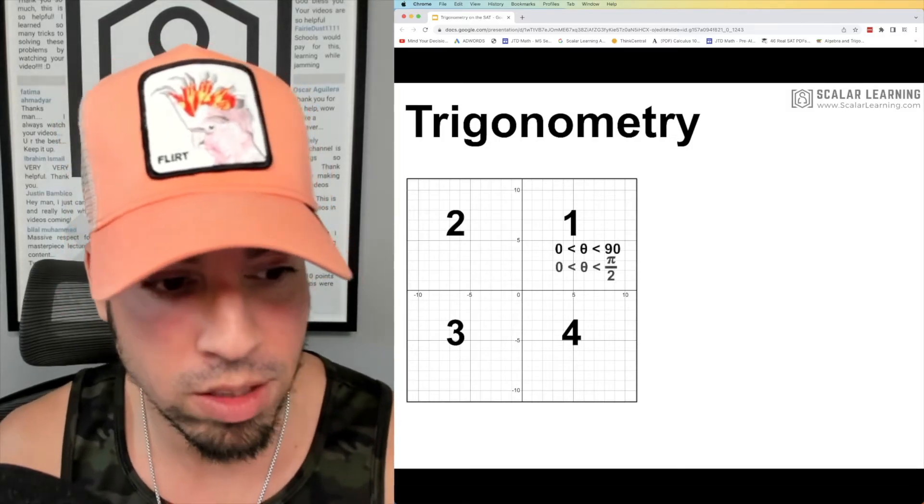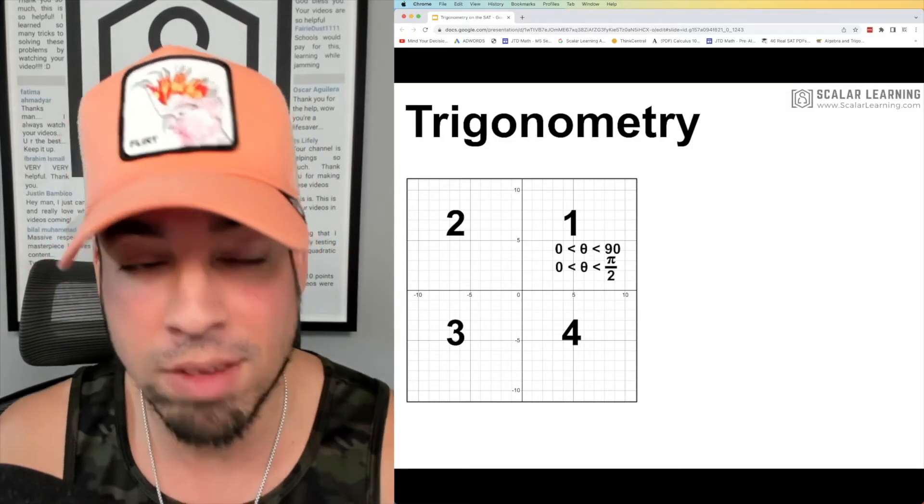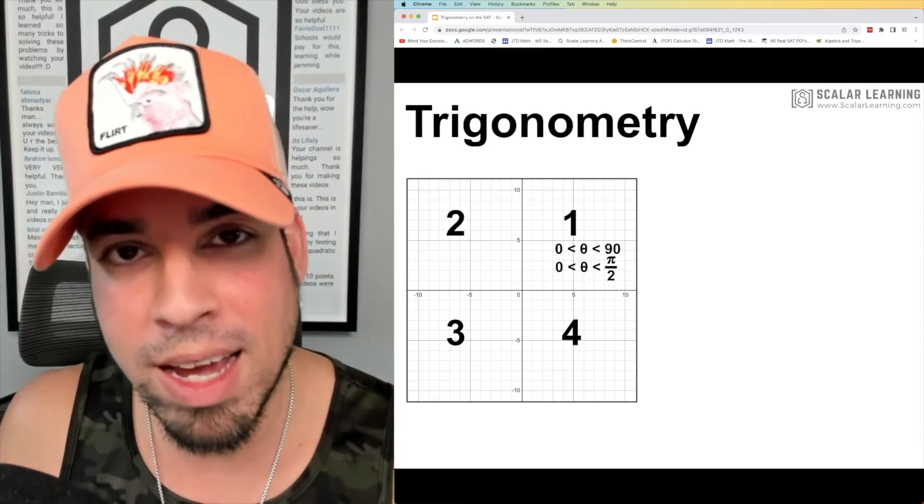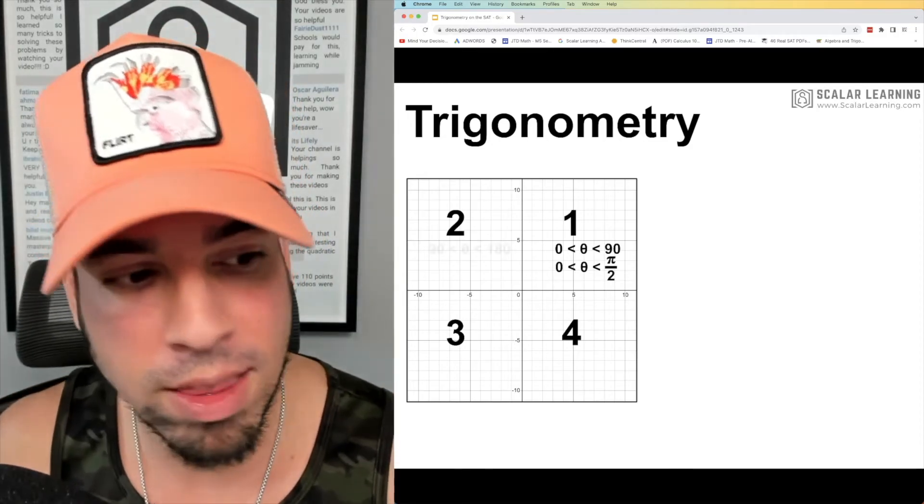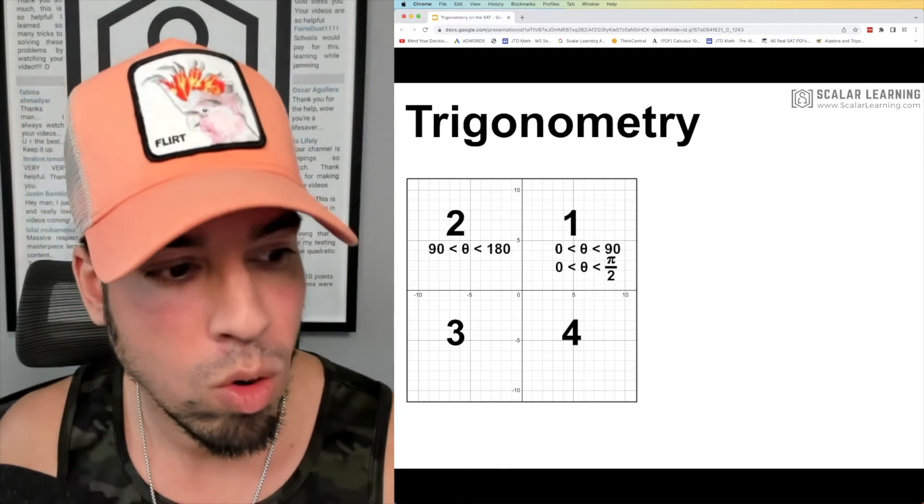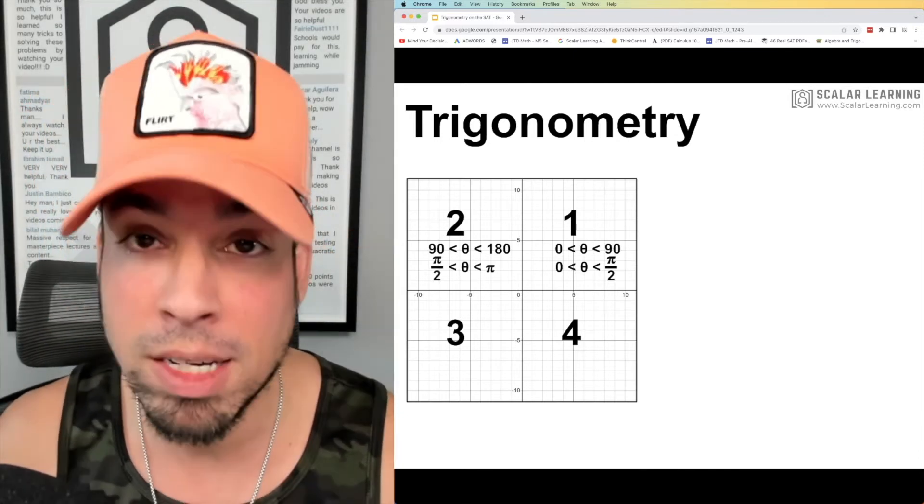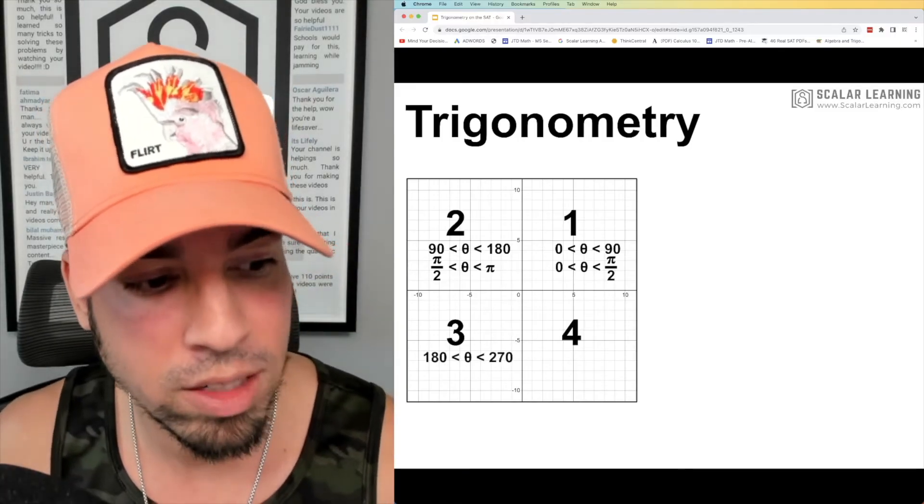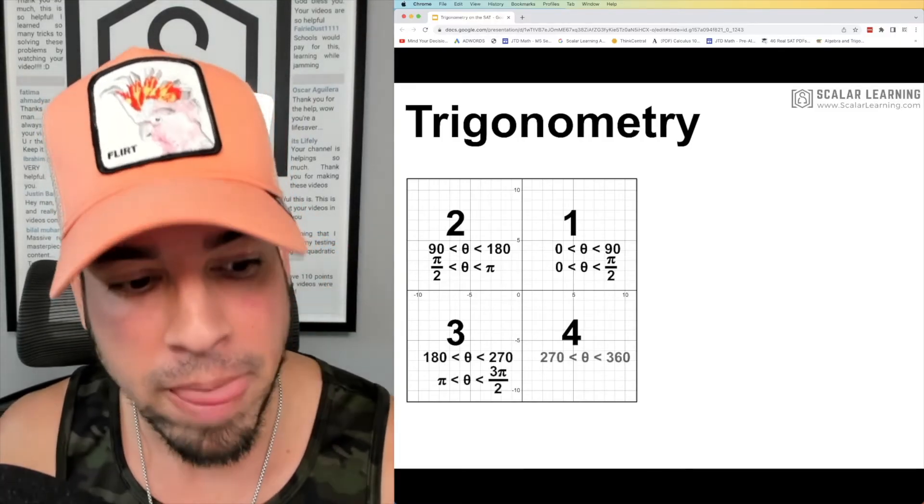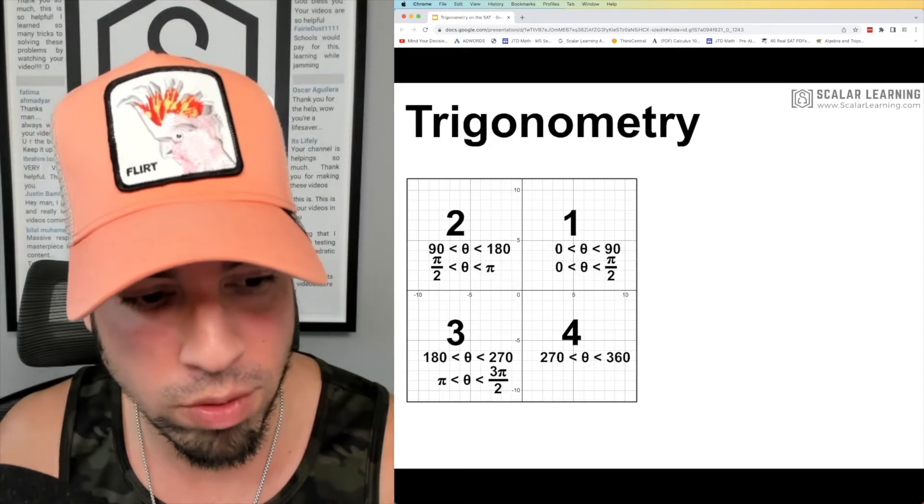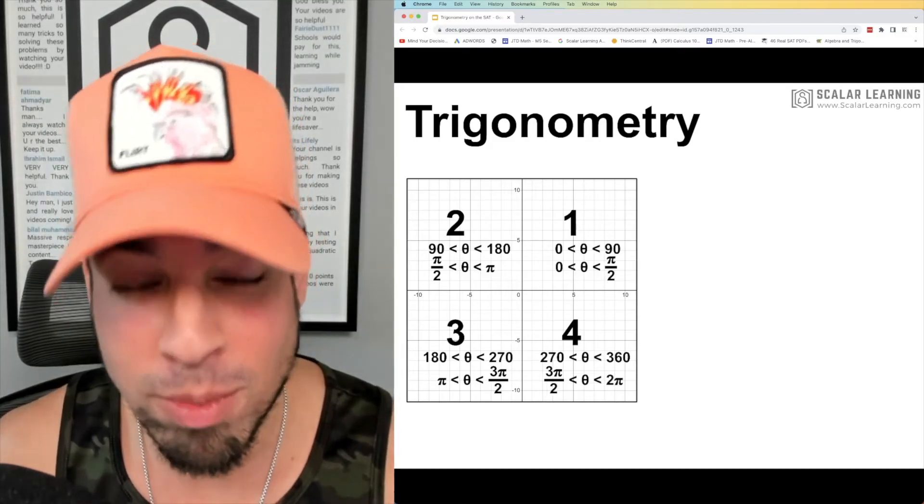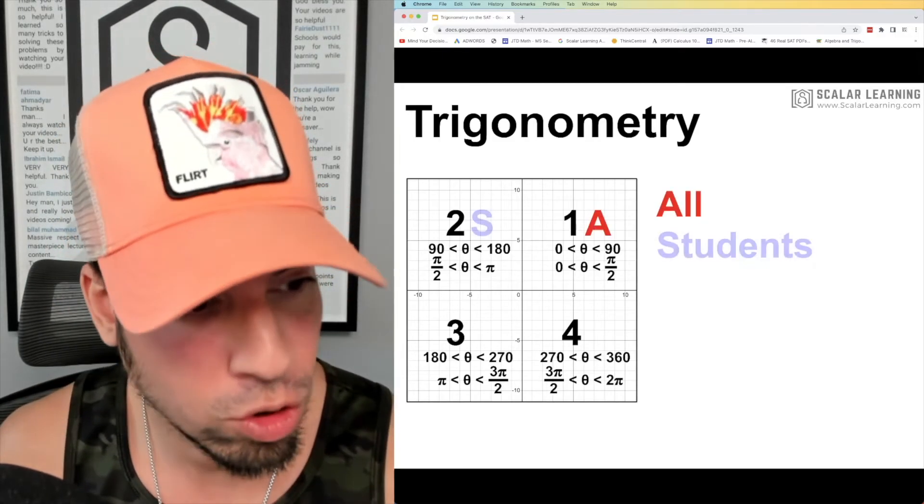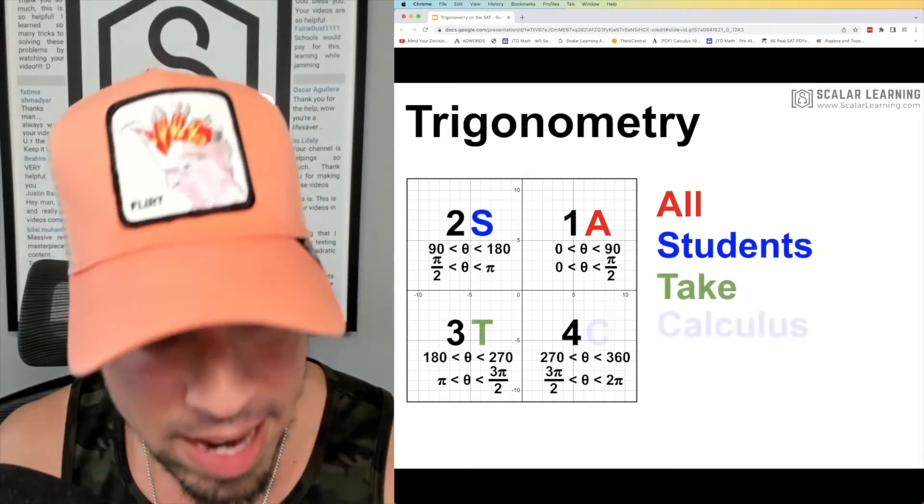For example, if we have a theta value that's between zero and 90 degrees—of course in radians zero and pi halves, pi halves and 90 are equivalent—we're going to be ending up in quadrant one. If we've got a theta value that's between 90 and 180, or pi halves and pi—pi is the same as 180—we're in quadrant two. Between 180 and 270, quadrant three, and 270 and 360, quadrant four.